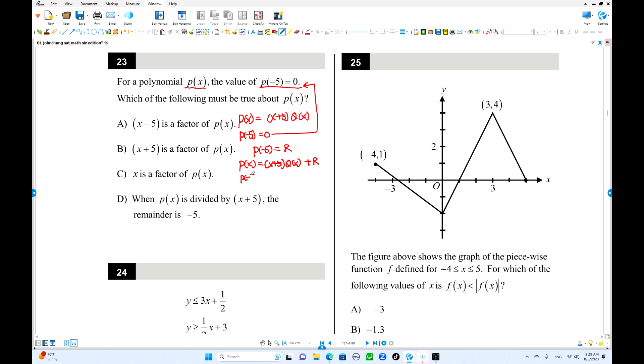If P of negative 5 is actually the value of r, this is remainder theorem. That means when P(x) is divided by x plus 5, remainder is r. But this time remainder is 0. This is factor theorem. So P(x) has a factor of x plus 5. Choice B is the answer.